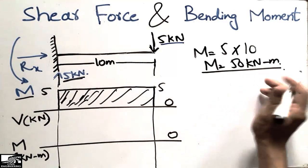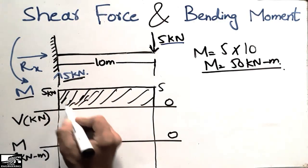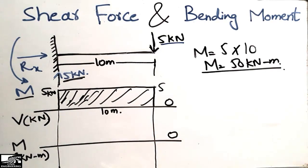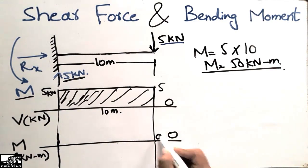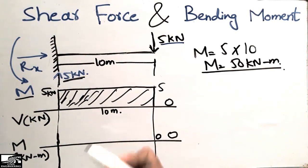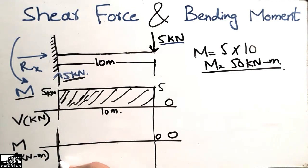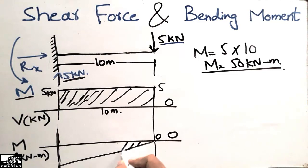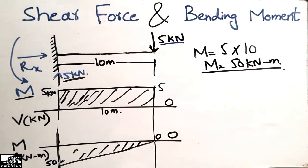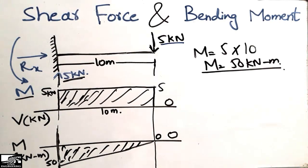The moment can also be verified from the shear force diagram: shear force is 5 kilonewtons and beam length is 10 meters. The moment at the free end is zero, and the maximum moment occurs at the fixed support — this is a property of cantilever beams. So the moment is 5 × 10 = 50 kilonewton-meters. This is the bending moment diagram. Please subscribe to our channel for more civil engineering videos.